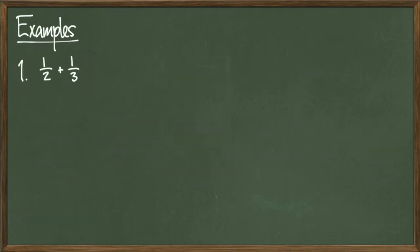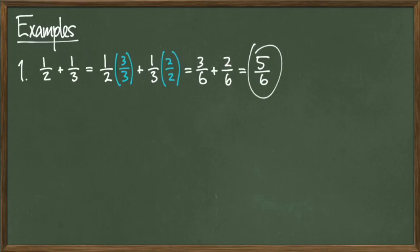Let's look at some examples. Compute 1 half plus 1 third. Going through, I'm going to multiply 1 half by 3 over 3 and 1 third by 2 over 2. Again, I take the denominator of the other fraction, create the fraction of that denominator over itself, and then multiply it in. One step of simplification gives me 3 over 6 plus 2 over 6, and now since I have common denominators, I can add to get 5 over 6 as my final answer.